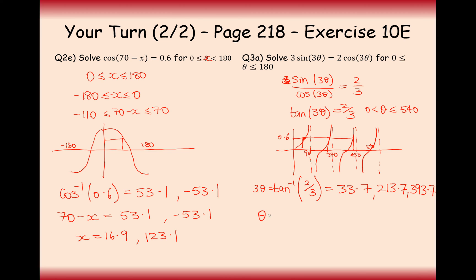All that's left for us to do now is divide all of these angles by 3. So 33.7 divided by 3 is 11.2. 213 divided by 3 is 71.2. And this one, the last one, would be 131.2. So there we are. That's the final set of solutions for the final question here.